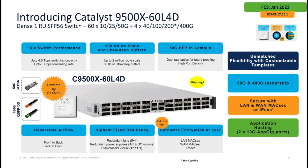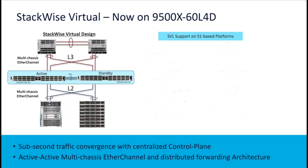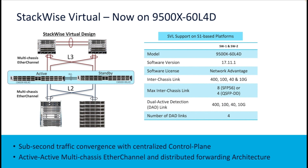This platform is based on the Cisco Silicon One ASIC. It includes uplink speeds up to 400GB, support for LAN and WAN MACsec, reversible airflow, and unmatched flexibility in device positioning with custom SDM templates. Starting in 17.11.1, this device also supports Stackwise Virtual Topology, which allows redundancy with multi-chassis EtherChannel. The Stackwise Virtual Topology supports up to 8 ports in the Stackwise Virtual Link with speeds up to 400GB.